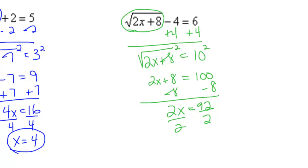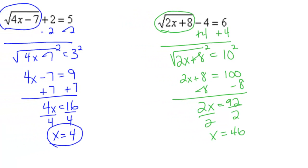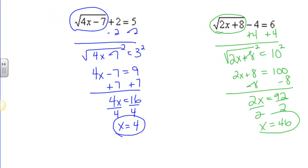Divide by 2 and I get x equals 46. Plug it back in: 2 times 46 is 92, plus 8 is 100, square root of 100 is 10, minus 4 is 6. So that one works out as well.